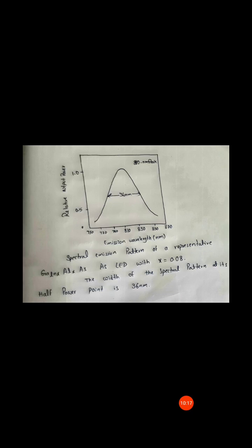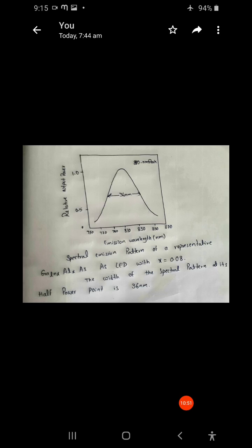To fabricate these light source materials, gallium aluminum arsenic and indium gallium arsenic phosphorus are chosen as semiconductor light sources. Because it is possible to match the lattice parameter, combinations of binary, ternary, and quaternary materials can be used for making light source materials.